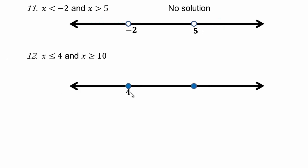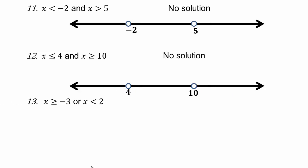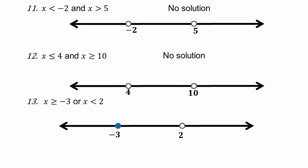For x less than or equal to 4 and x greater than or equal to 10: that's not going to happen, so no solution. For x greater than or equal to negative 3 or x less than 2: when you go above negative 3, everything is taken including 2. Then going below 2 covers the rest, so the whole number line is covered — negative infinity to infinity. Even though 2 is not included in the second condition, it gets included because 2 is a number above negative 3.